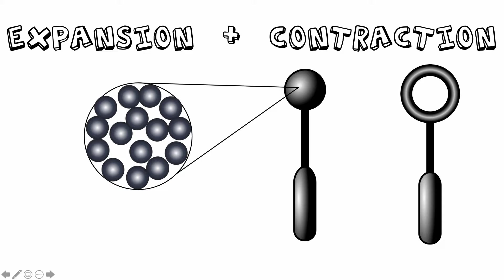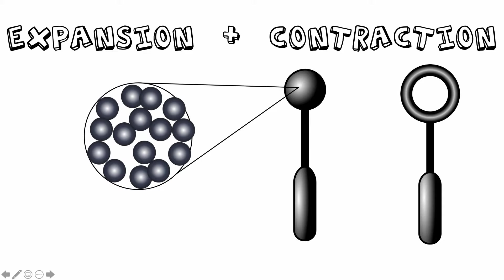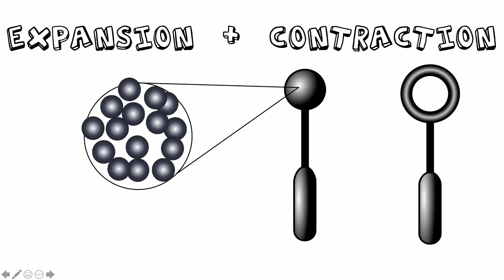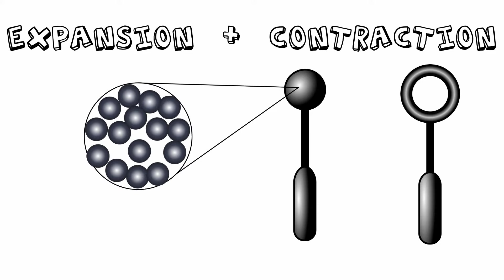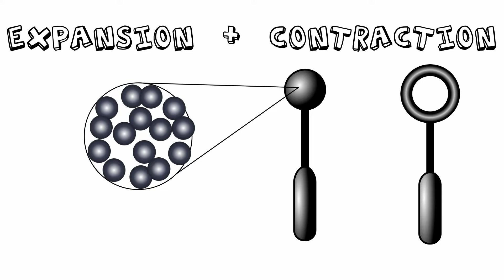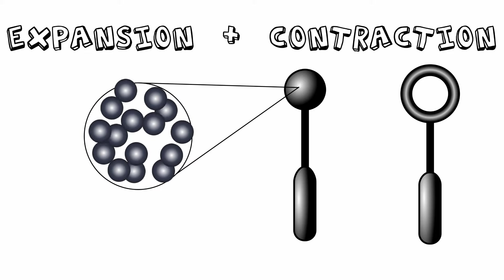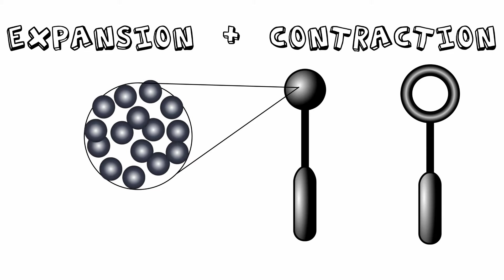In a solid, you might have done this experiment in school already. Here we have a metal ball and a metal ring. At room temperature, the ball fits perfectly through the ring. After heating the ball, however, it no longer fits through the ring.